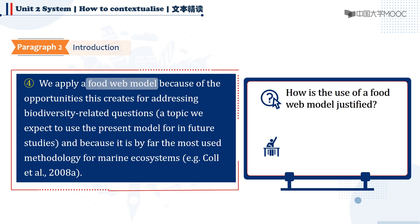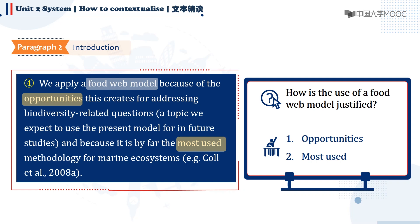How does it justify the use of such a model? First, it introduces the opportunities for solving the biodiversity-related problems, and next, it highlights it's the most used model. Suppose this sentence was not included, or it was written as simply 'In this research, we apply the food web model.' What would happen? It is likely that the expert readers would question the use of the model. As a result, it makes the research less convincing.